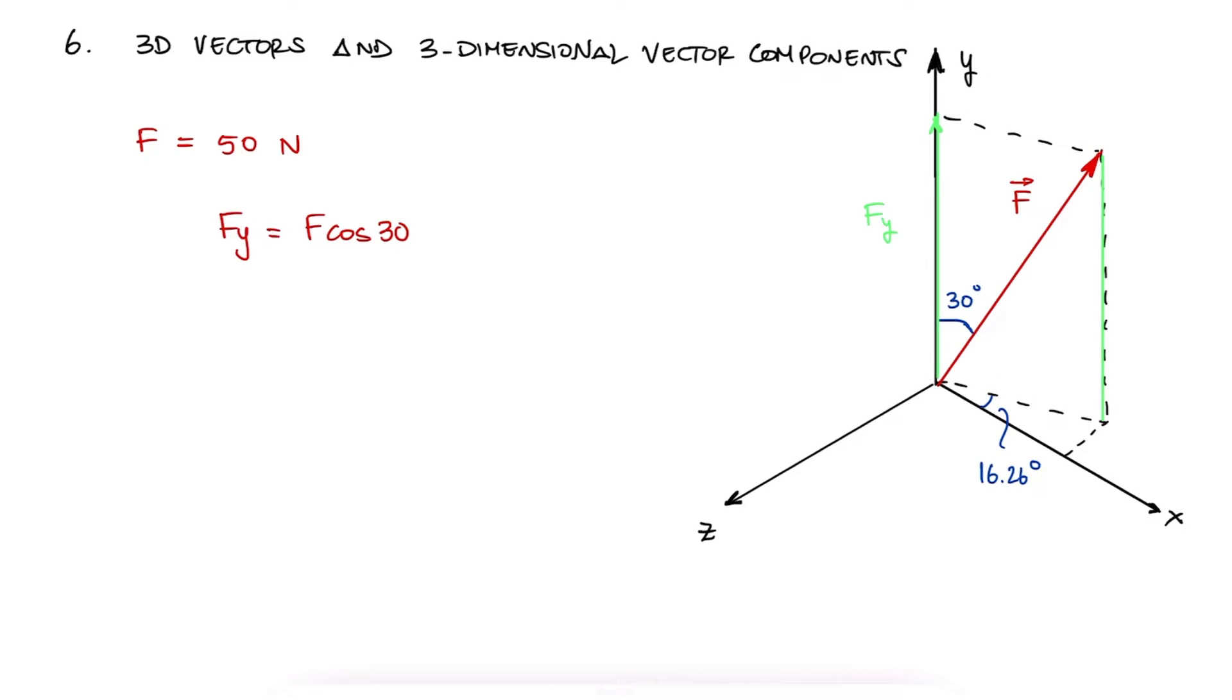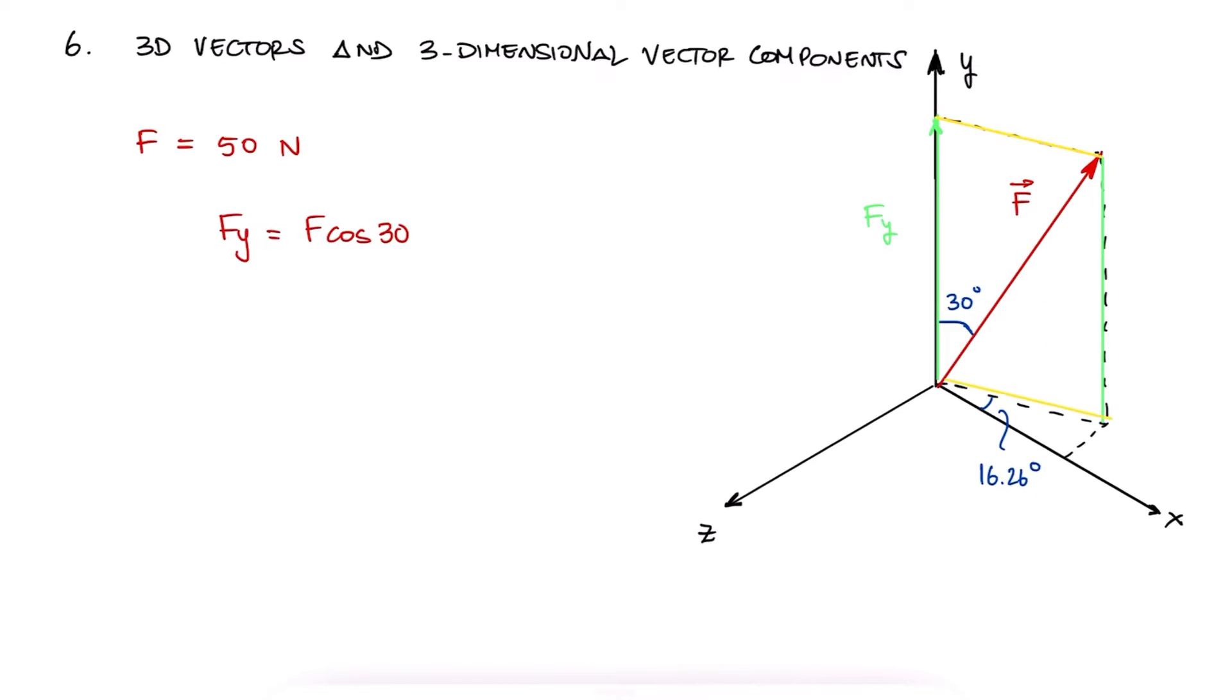On the other hand, the opposite side of the 30 degrees, which is at the top but also at the bottom, that is 50 sine of 30, would be the hypotenuse of the right triangle that is found on the horizontal plane.